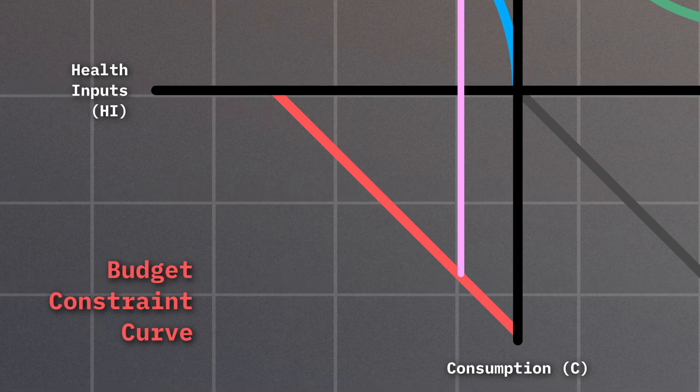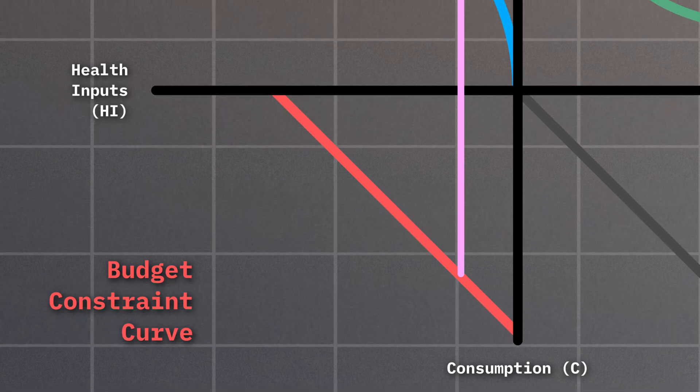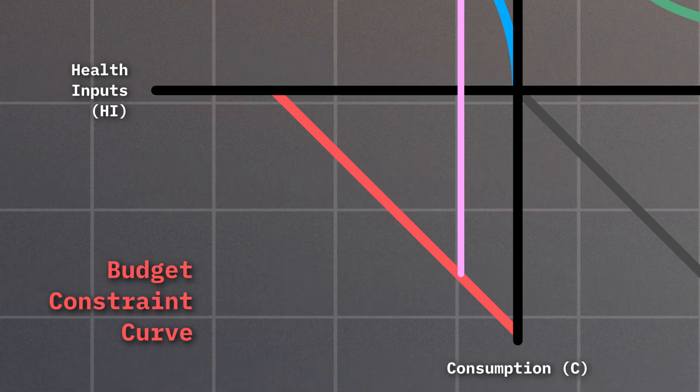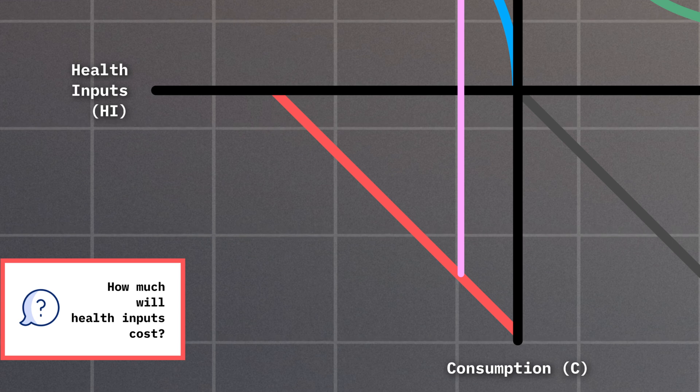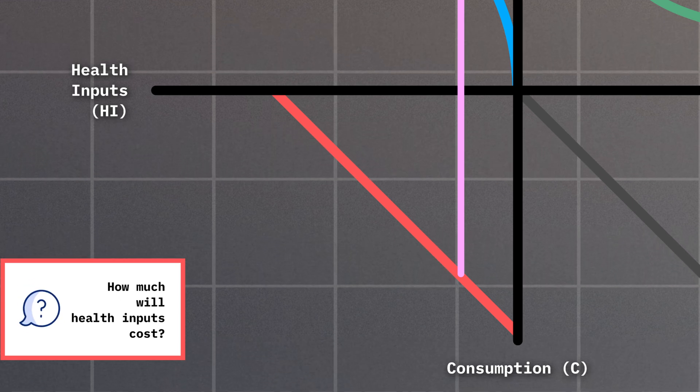In this context, the slope of the budget constraint is related to the price of a unit of health input. This means it tells us how much money we have left to spend on consumption after we bought our health inputs. It's like asking how much our health inputs will cost, which is a good reminder for how the third quadrant works.